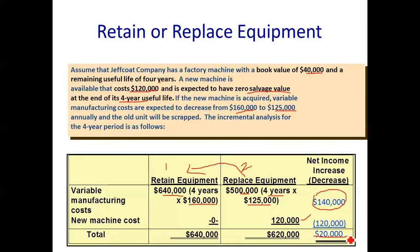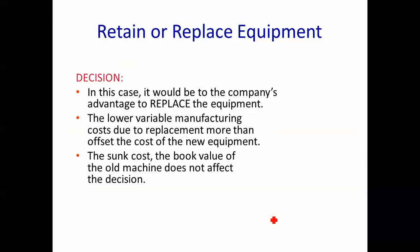It's better by $20,000, so the decision here is to replace that equipment. The lower variable manufacturing costs due to the replacement more than offset the cost of the new equipment. The book value is a sunk cost and should not affect the decision.